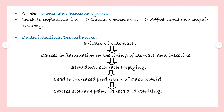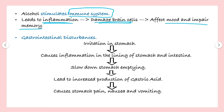Alcohol also stimulates our immune system, which causes inflammation and some brain cells get damaged. That affects our mood and impairs memory. This also leads to gastrointestinal disturbances.